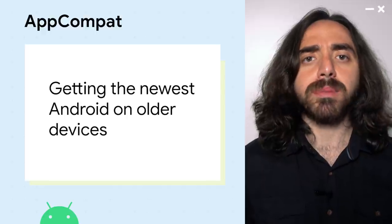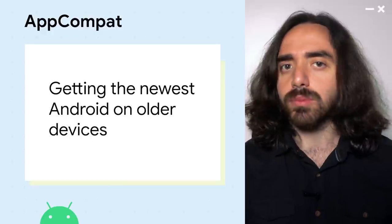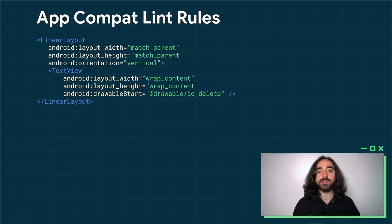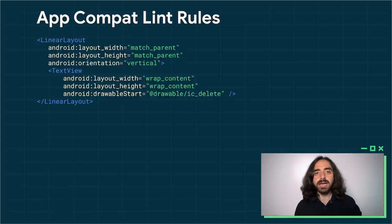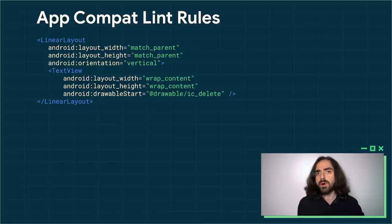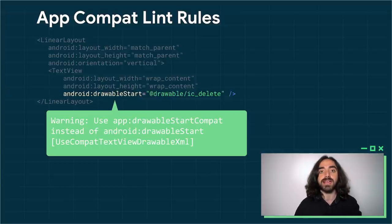Onto our most popular library: AppCompat. AppCompat provides backports for a wide variety of UI elements and platform features, from the material theme to Dark Mode. Because some functionality from the framework is duplicated into AppCompat, it might be difficult to figure out which attribute you should use. To help you make the most of the library, we have added a set of library-specific lint rules. For example, here is a layout where I've used the drawableStart attribute to set a drawable on a TextView. If you open this code in Studio, it will immediately show a warning and ask you to replace it with the more fully featured AppCompat version of the same attribute.